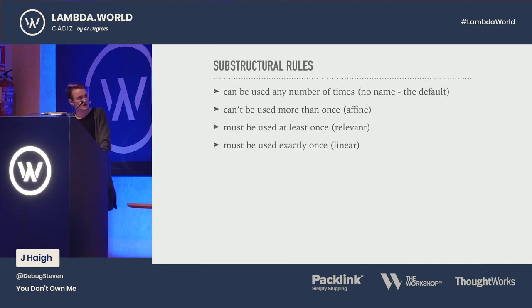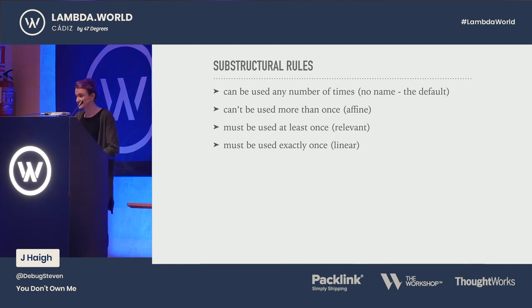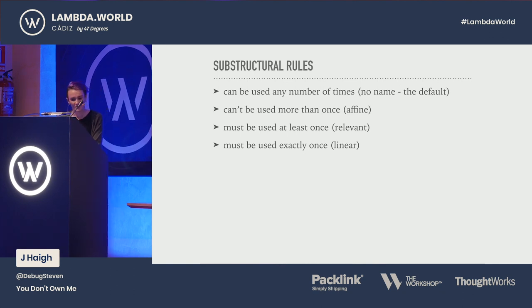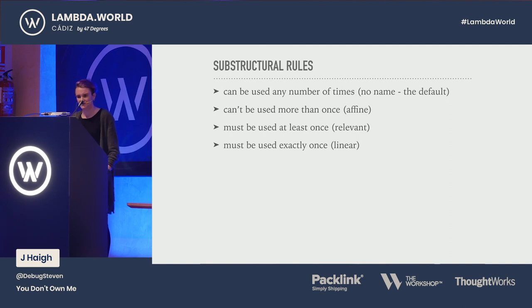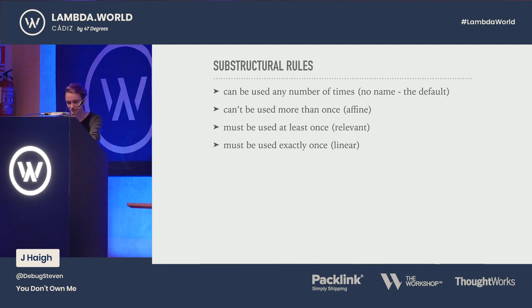In substructural type systems, we care about two operations: weakening — can be used at most once — and contraction — can be used at least once. Gankra has written a post on why Rust doesn't have linear types, which is relevant because people often think linear and affine are synonyms, but they are not. So how do you define a use? Rust kind of plays around with this. Can be used any number of times is just the default. Can't be used more than once is an affine type system. Must be used at least once is relevant. Must be used exactly once is linear.